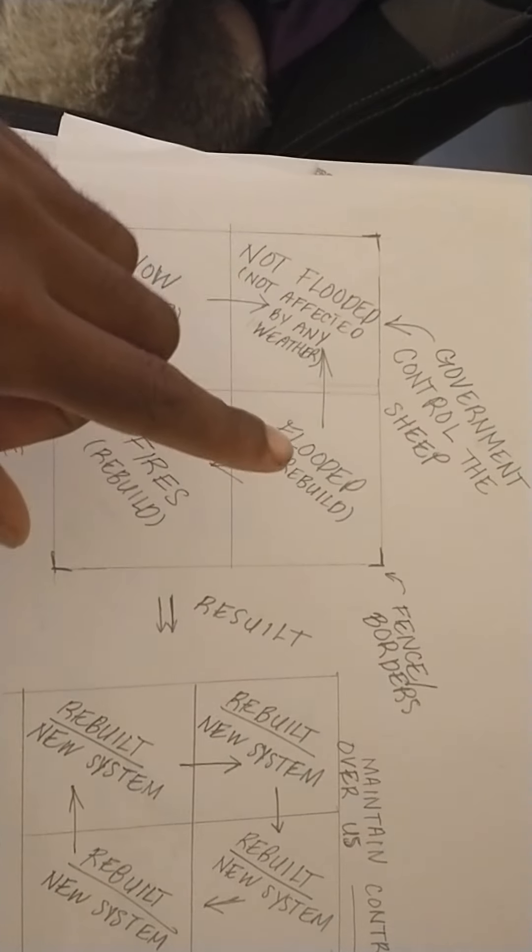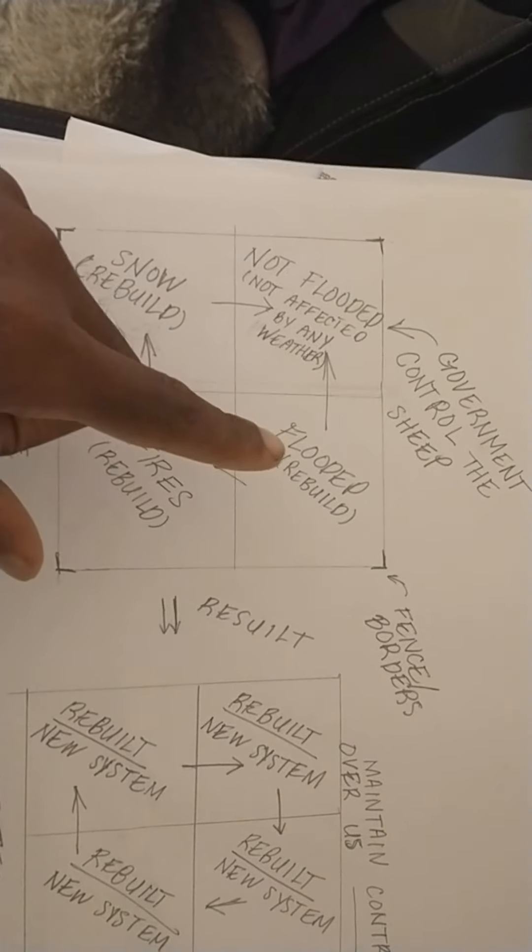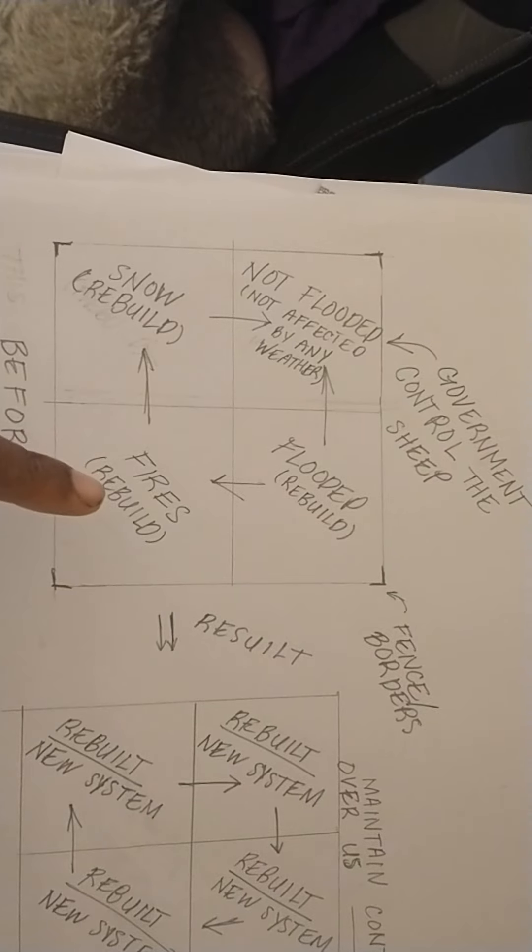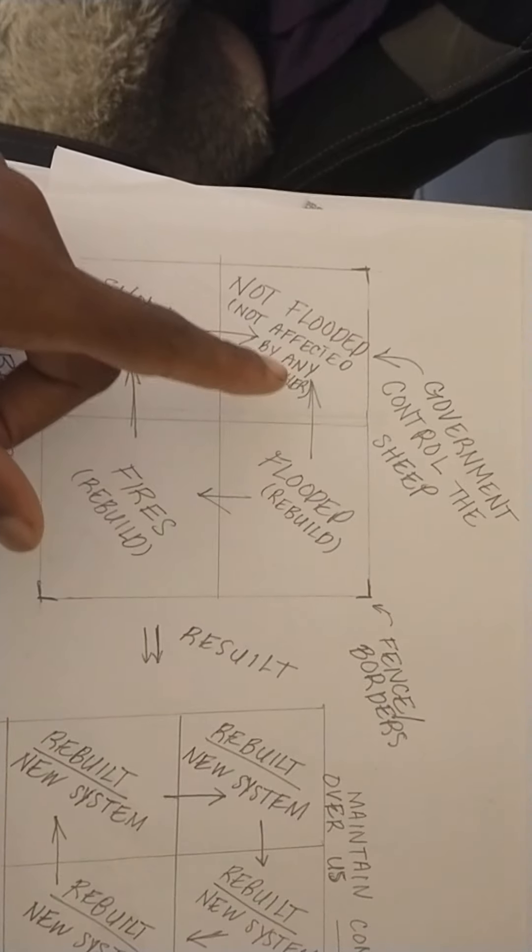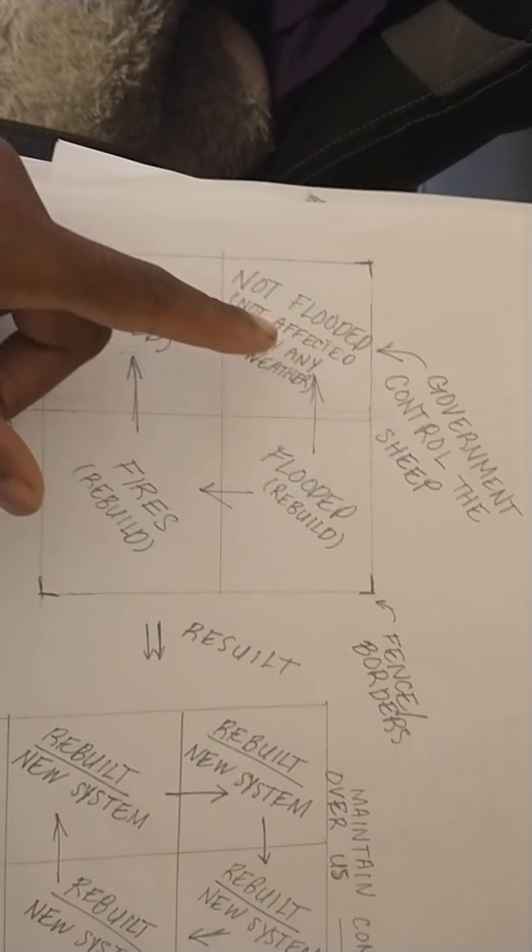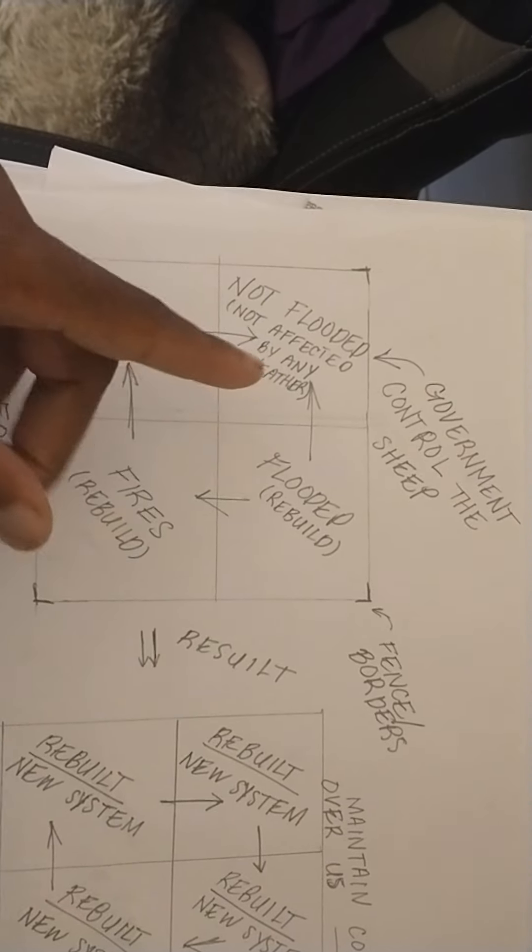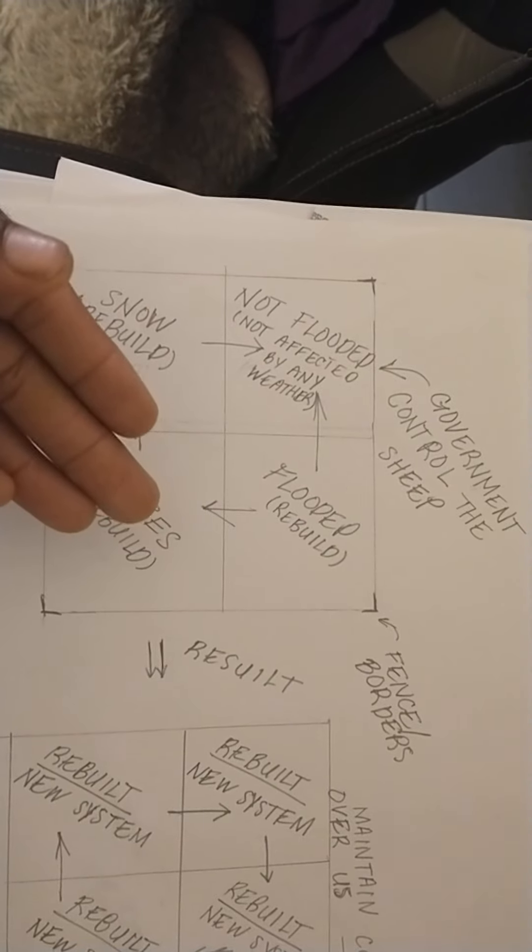And let's say you got floods taking place here, fires taking place here, and snow taking place here, and then you got a particular area that's not being affected at all like my area.